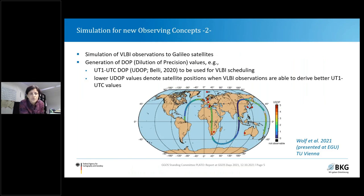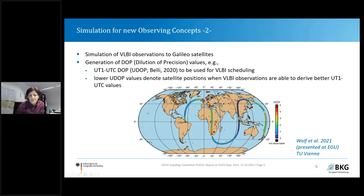A second example for a new observing concept is done in Vienna. They are doing simulations of VLBI observations to Galileo satellites, focusing on a parameter called Dilution of Precision, and applying this method to the UT1 minus UTC parameter — the major VLBI information — using this quality measure in VLBI scheduling to get improved scheduling for parameter determination. The lower the UDOP value assigned to a satellite position, the better the VLBI observations are able to derive a UT1 minus UTC value.